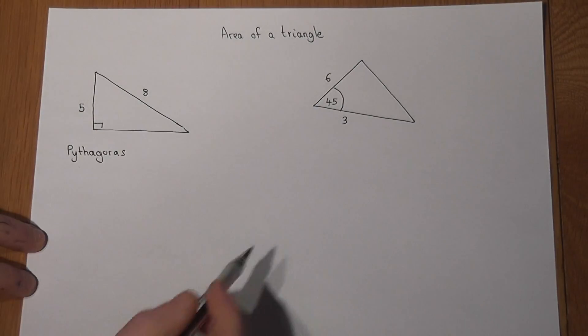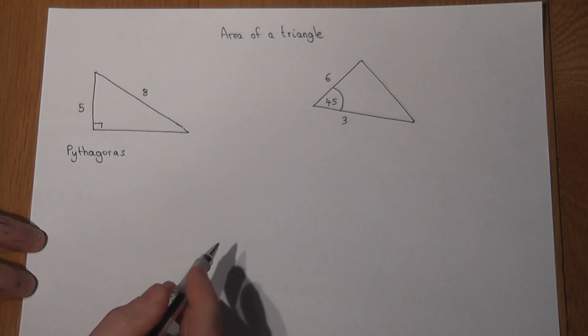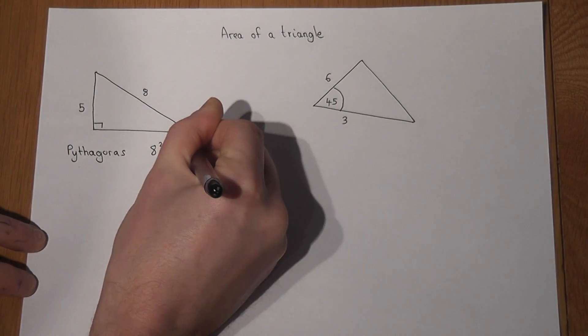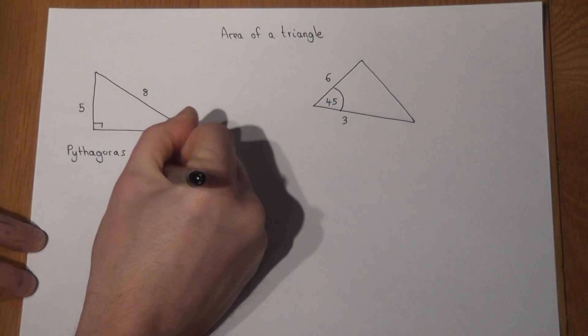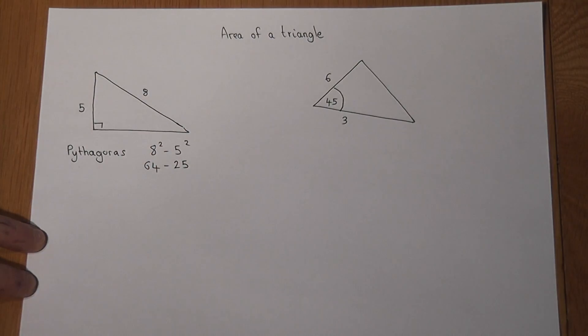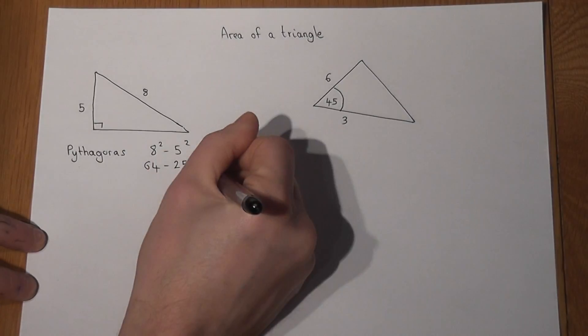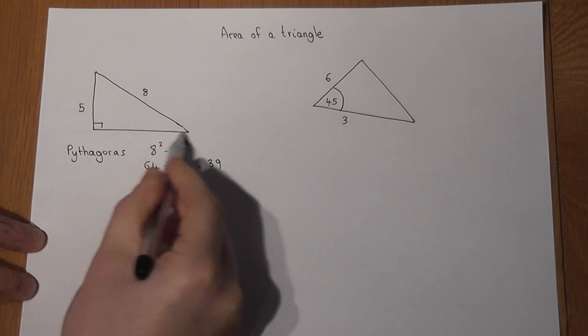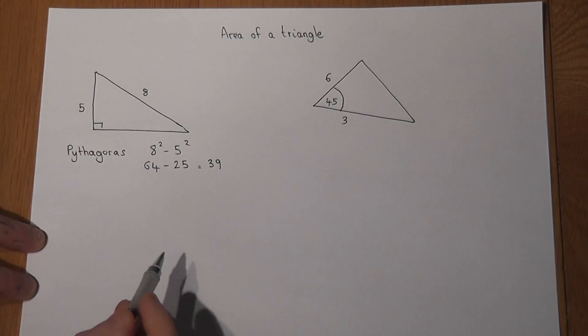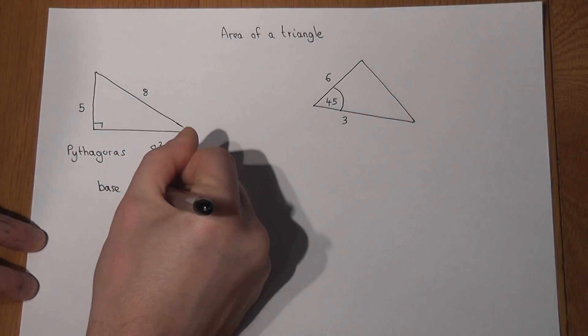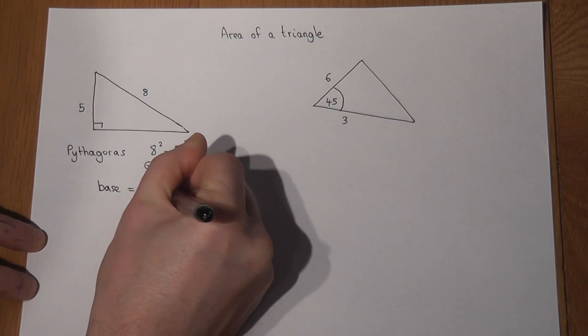We know the hypotenuse, so if I do 8 squared take away 5 squared, which is 64 take away 25, then I end up with 39. So the base squared is 39, so therefore the base must just equal the square root of 39.